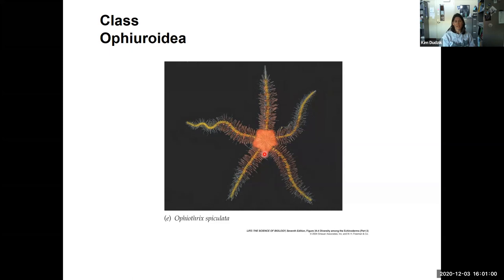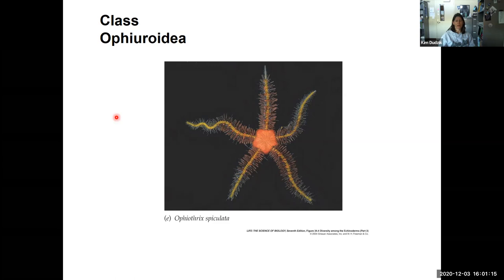And that's it for Echinodermata. Know the characteristics of the phylum, know the characteristics of each of the classes, and be able to identify a representative animal for each class. Thanks everybody.